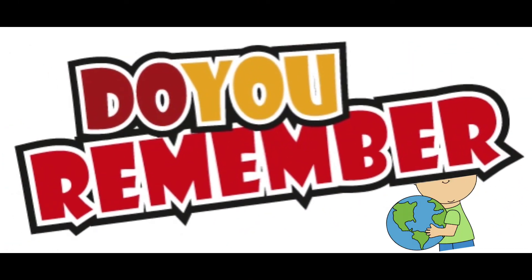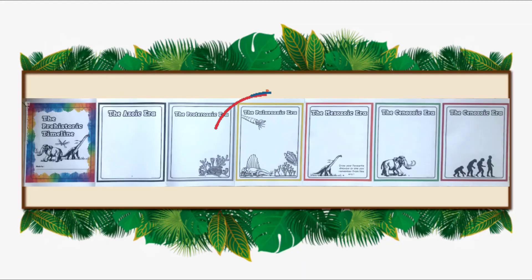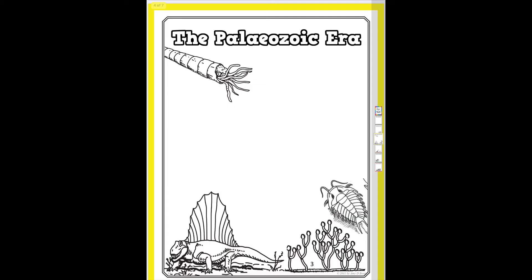Ok children, now let's see if you remember which plants and animals lived in the Paleozoic era. You can take the sheet and draw some of the plants and animals that you remember, and you can colour the ones that you see. See you again tomorrow.